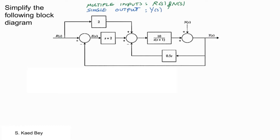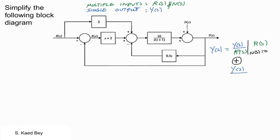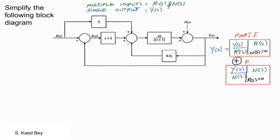By superposition, or using the rules discussed in the previous video, the output Y is made up of two parts. Part 1 is produced by the reference signal R when the measurement noise is set to zero, whereas Part 2 is produced by the measurement noise when the reference signal R is set to zero.